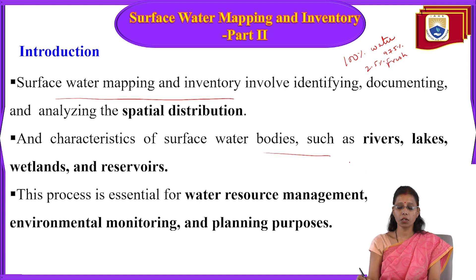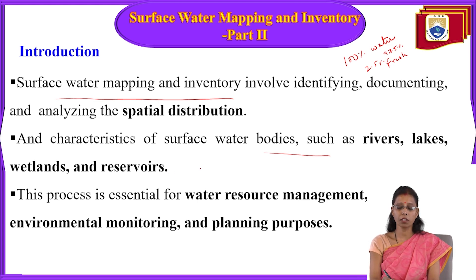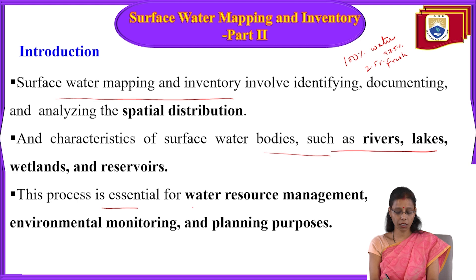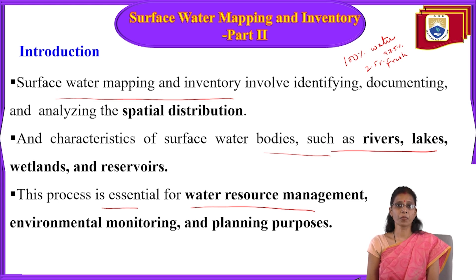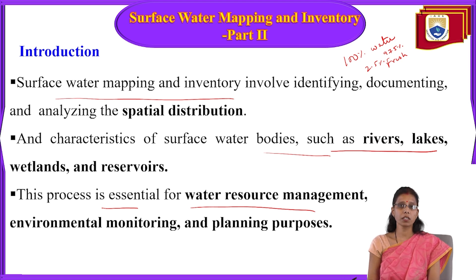The characteristics of surface water bodies — such as rivers, lakes, wetlands, and reservoirs — are captured through this process, which is essential for water resource management, environmental monitoring, and planning purposes. Water resource management covers not only surface water but also watershed areas and groundwater presence. Environmental monitoring helps track changes on the Earth's surface for planning purposes.